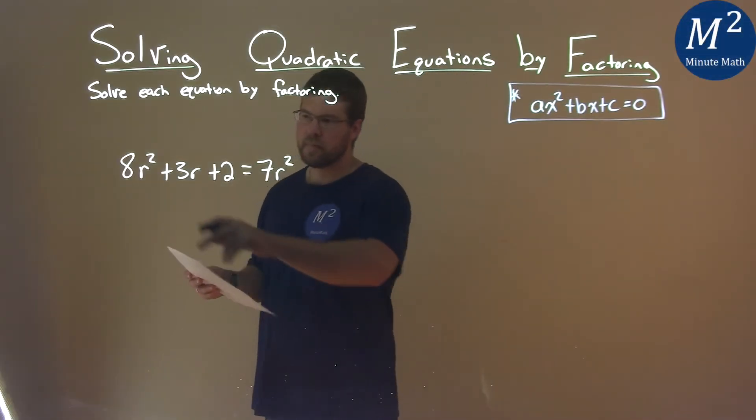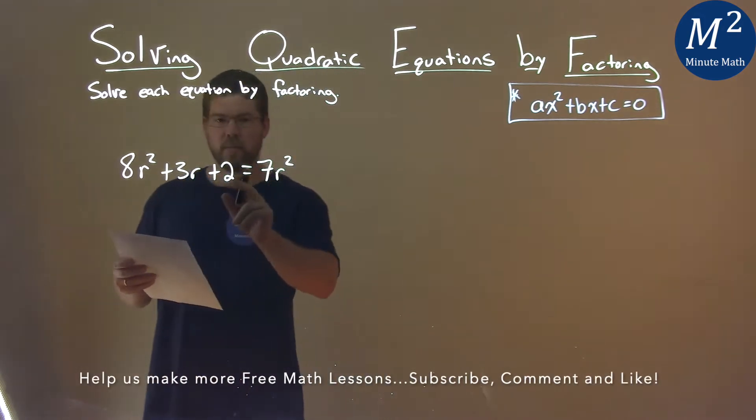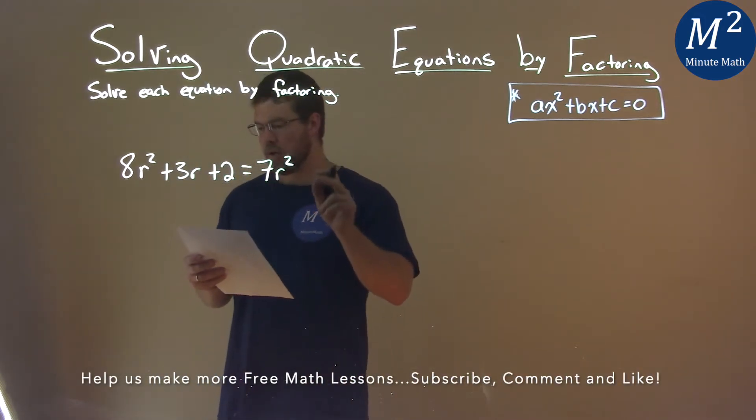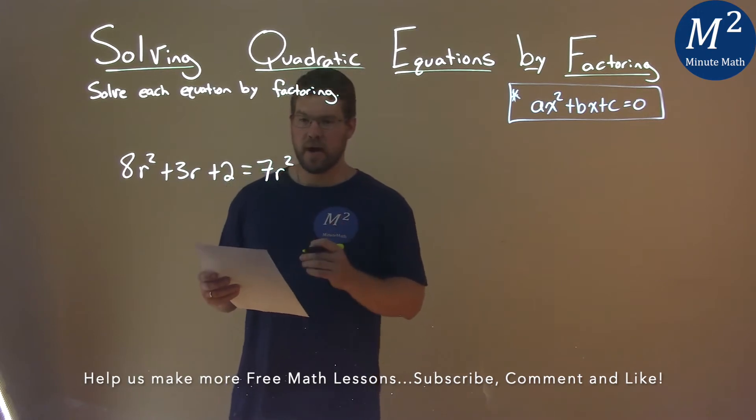We're given this problem right here. 8r squared plus 3r plus 2 equals 7r squared, and we need to solve this by factoring.